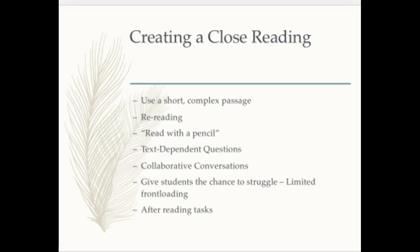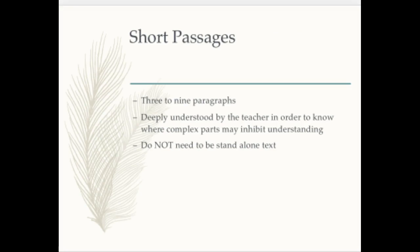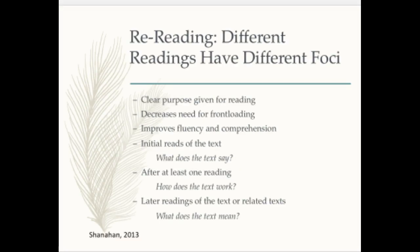When creating a close read, you're going to use a simple text and re-read the text. Make sure and teach students to read with a pencil, annotating the text. It will have text-dependent questions where they have to use the text to answer the question. It has limited front-loading because you want kids to discover things within the text. They're usually short passages, but they don't have to be stand-alone — it can be poetry or anything. Make sure they have a clear purpose and that it should improve fluency and comprehension. There are three steps: first read is what does the text say, second read is how does the text work, and third read is what does the text mean.